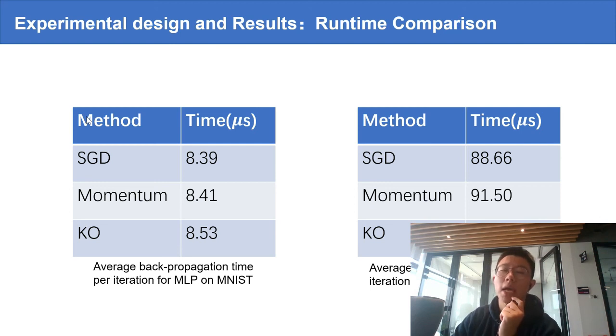Theoretically, by only using the scalar Kalman filter, Kalman Optimizer only adds O(N) time complexity for the gradient computation compared to SGD. So the runtime is still very fast.